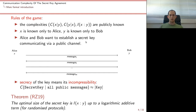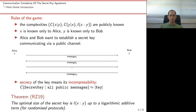We want the key to be secret from the eavesdropper. In the theory of Kolmogorov complexity, 'secret' means incompressible — the complexity of the key is almost as large as its length, so it cannot be compressed to something much smaller. It looks random. In formal terms, the condition on the secret key is that the complexity of the secret key given all the public messages is almost as large as the length of the key. Given these rules, the theorem by Romachenko and Zimand from their 2019 paper is: the optimal size of the secret key is the mutual information of X and Y up to a logarithmic additive term.